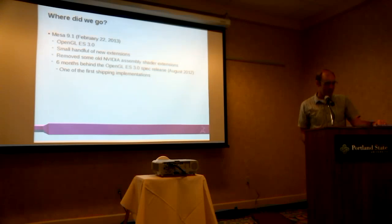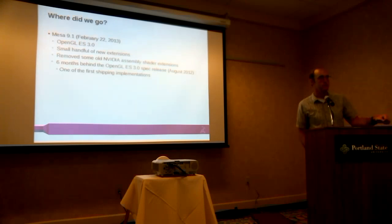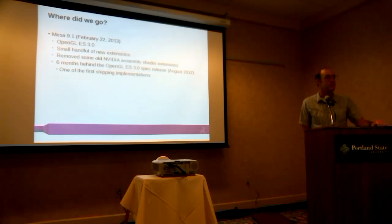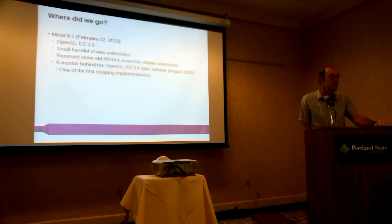This most recent February, we had 9.1, which had OpenGL ES 3.0 support, a small handful of new extensions, and removed some stuff that nobody was using. We were six months behind the spec release, which was really a paper launch of ES 3.0. We were one of the first three shipping conformant implementations of ES 3.0 — something that, as far as I know, had never happened in Mesa history: the open source implementation shipping at the same time as the first closed source ones. Maybe OpenGL 1.1 or 1.2, back around 1994 or 1995.